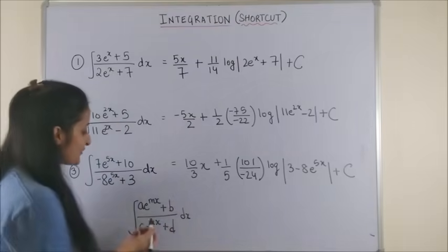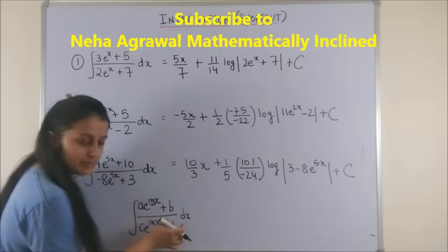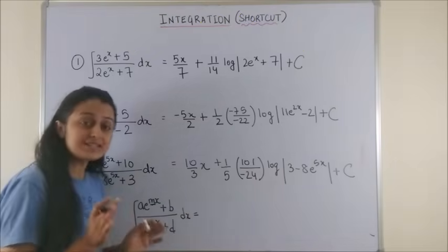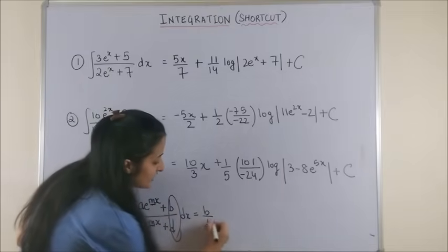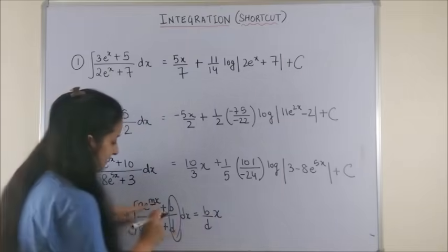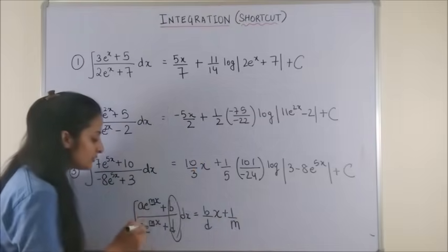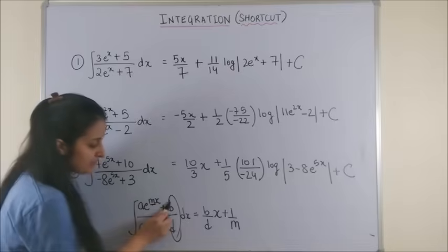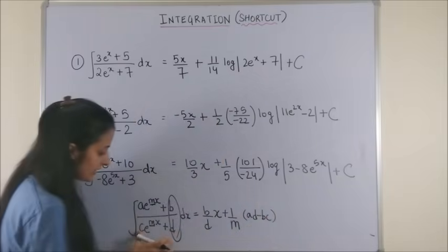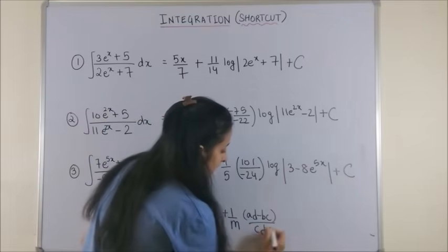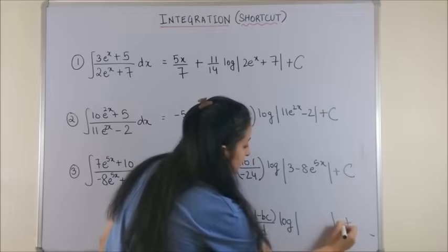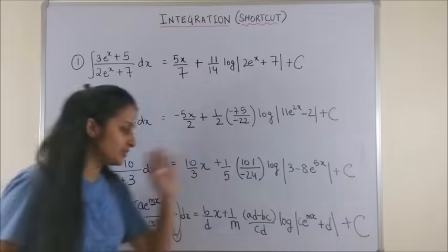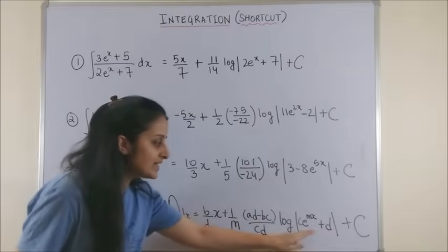So if you come across this form which is a times e raised to power mx plus b upon c times e raised to power the same mx plus d, then the formula simply becomes you take this b by d and attach an x to it. Next, you take this power which is plus 1 by m and then what you do is you take the determinant of this a, b, c, d with whatever sign it has. So it is basically ad minus bc upon the product of the denominator, so c and d into log mod of the denominator which is c times e raised to power mx plus d plus c or k whatever you wish to write. Please note this 1 by m basically comes from here.